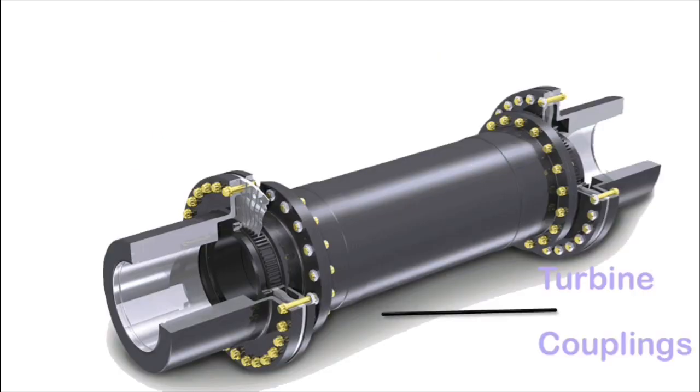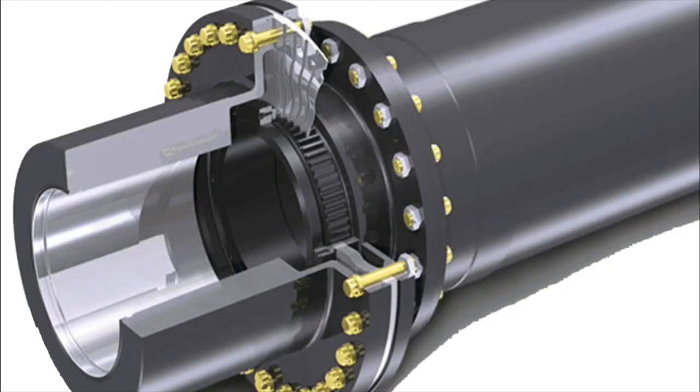Turbine Couplings. The purpose of coupling is to transmit power from the prime mover to the driven piece of the machinery. Flexible type couplings are used in turbines. The coupling hubs are taper bore and keyway to fit the taper end of the shaft.